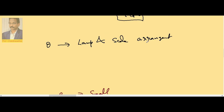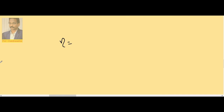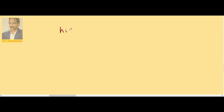Second, the wire must twist easily. If twisting is easy, even small currents can be measured. The rigidity modulus η relates stress to angular strain. For a small current to produce a large twist θ, we need a small rigidity modulus. So the wire must have high Young's modulus and small rigidity modulus.